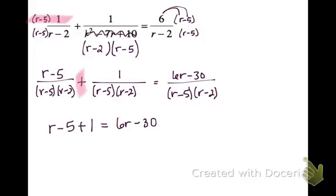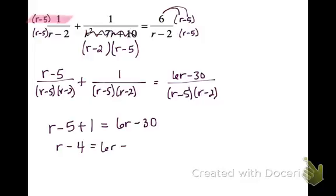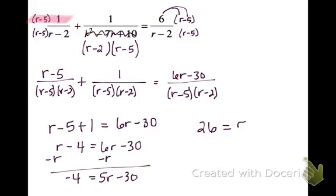Be careful that if there is ever a negative sign there, you would put a minus and may have to distribute it to other things in the numerator. So I'm going to combine negative 5 and 1, then subtract the r to get r's on the same side, and add the 30 over. Divide by 5, and I get r equals 26 over 5.